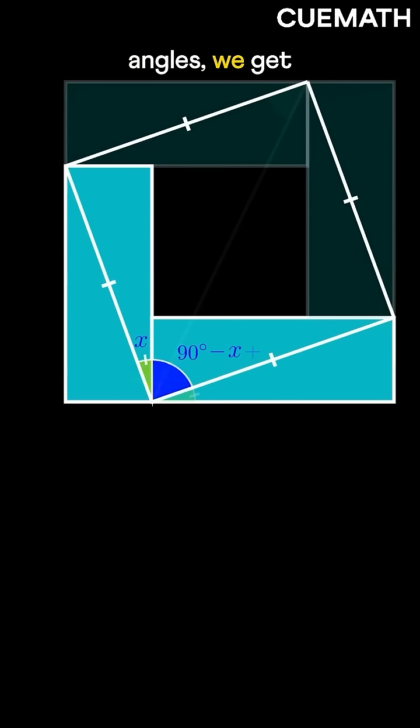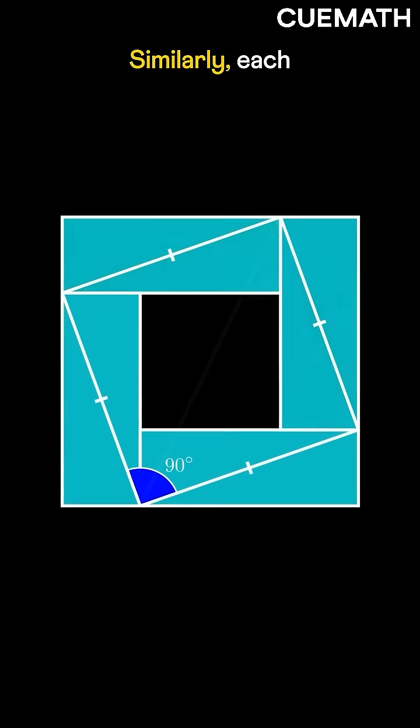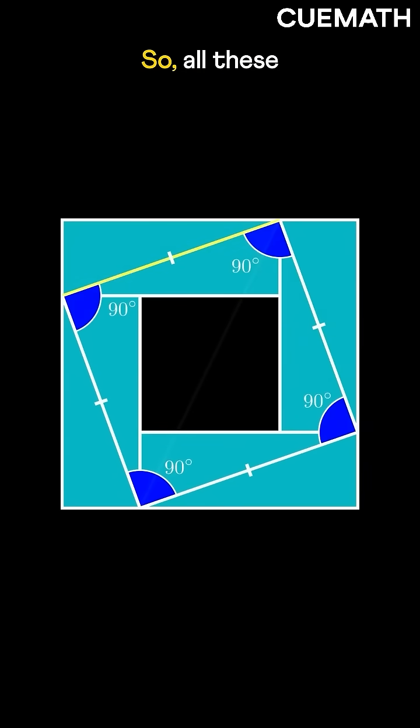And if we add these two angles, we get 90 degrees. Similarly, each of these angles must be 90 degrees. So all these equal lines meet at 90 degrees, forming a square.